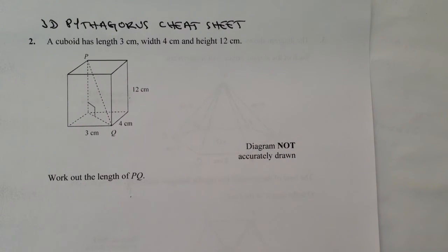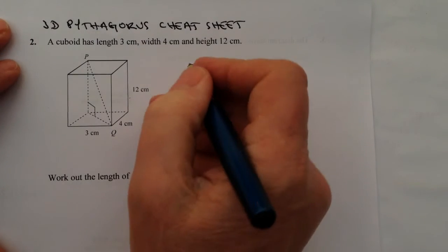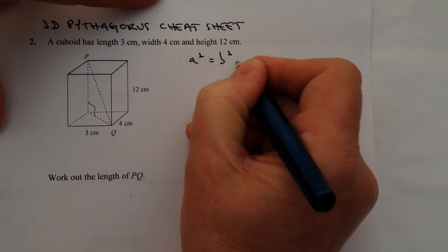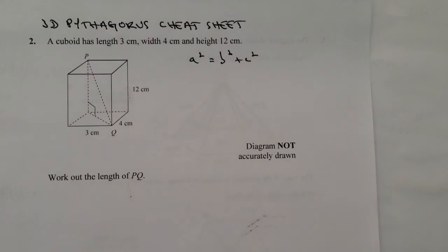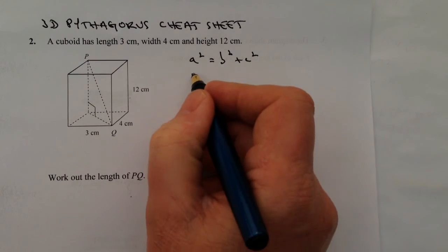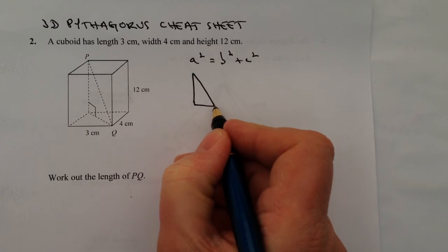So as the name implies, the important thing is you need to remember the formula for Pythagoras, which is A squared equals B squared plus C squared. And then effectively, with most of these questions, you're working in two areas because you appreciate that with this question we're being asked to work out PQ.